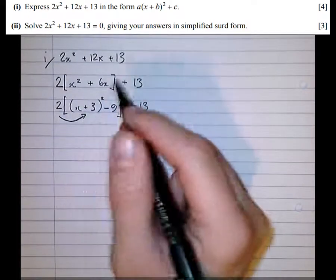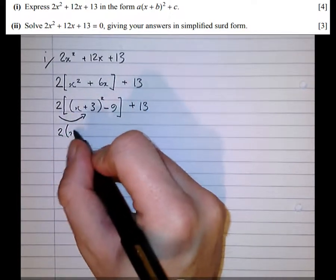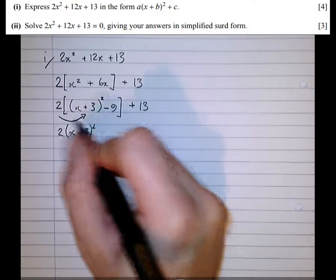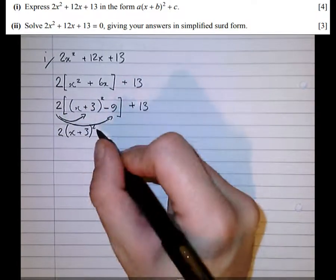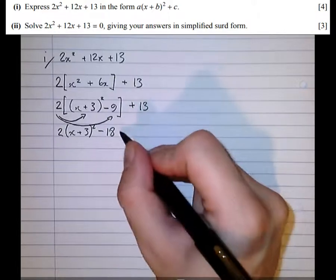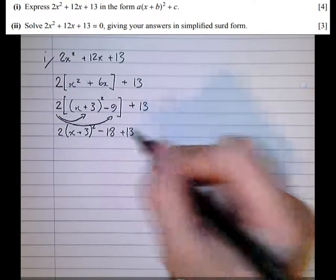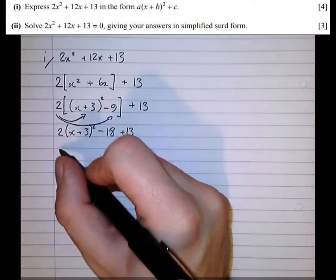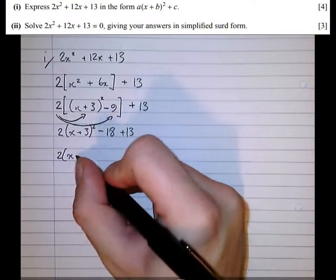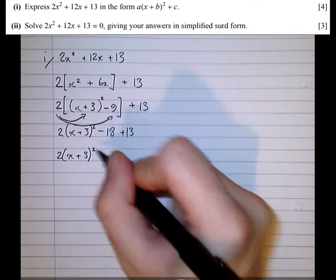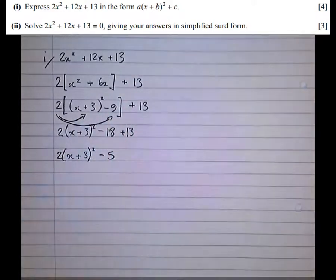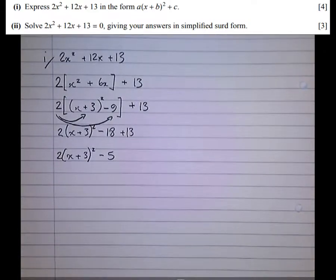Multiplying out the square bracket now, we get 2(x + 3)² - 18 + 13. And finally, simplifying to 2(x + 3)² - 5. And that's that first part done. We've completed the square for the first part.